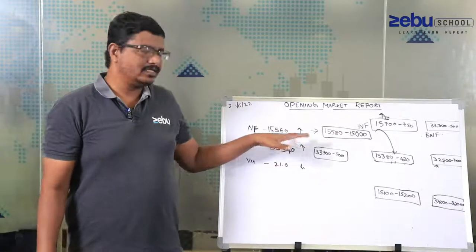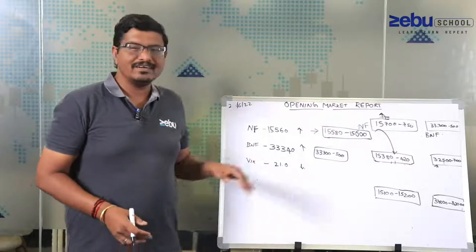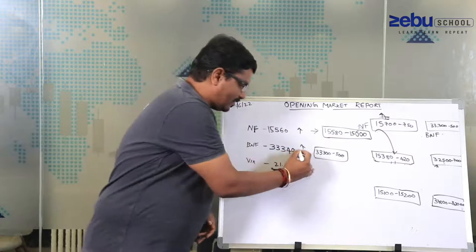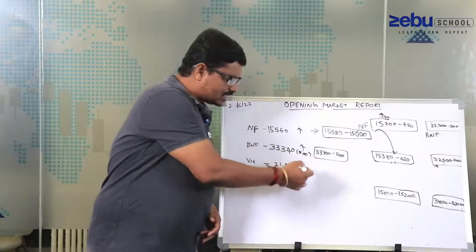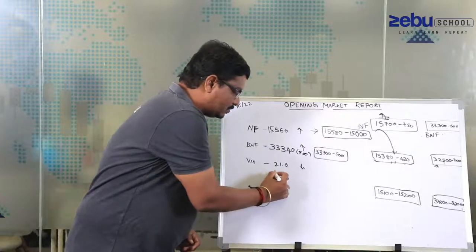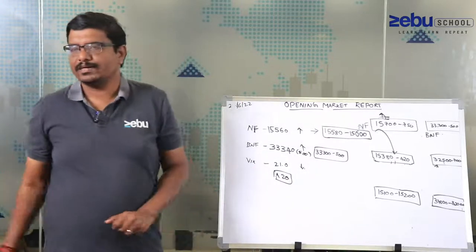It's trading around 150 points up, and Bank Nifty at 33,340, that means almost 500 points up which is slightly down. VIX is trading around 21, which is slightly greater than 20, a slight worrying factor for traders.